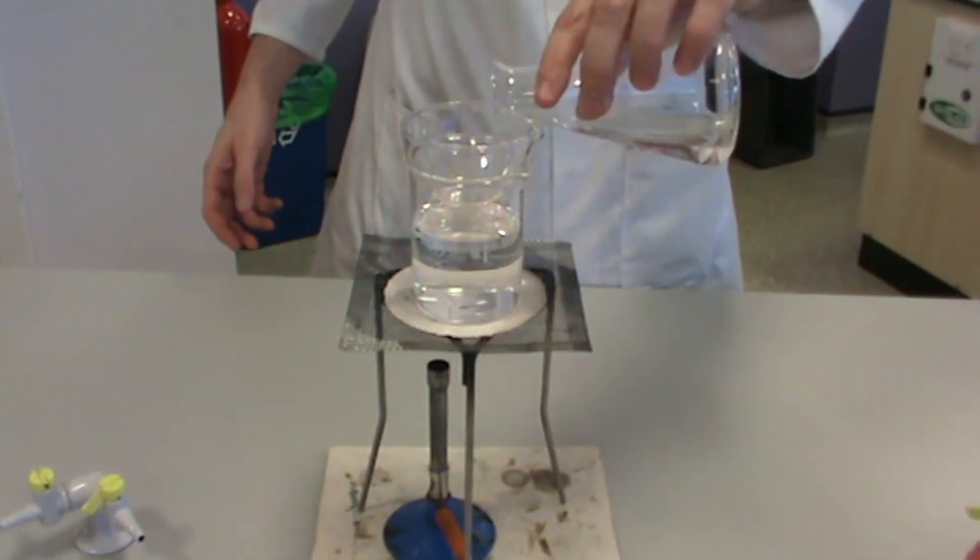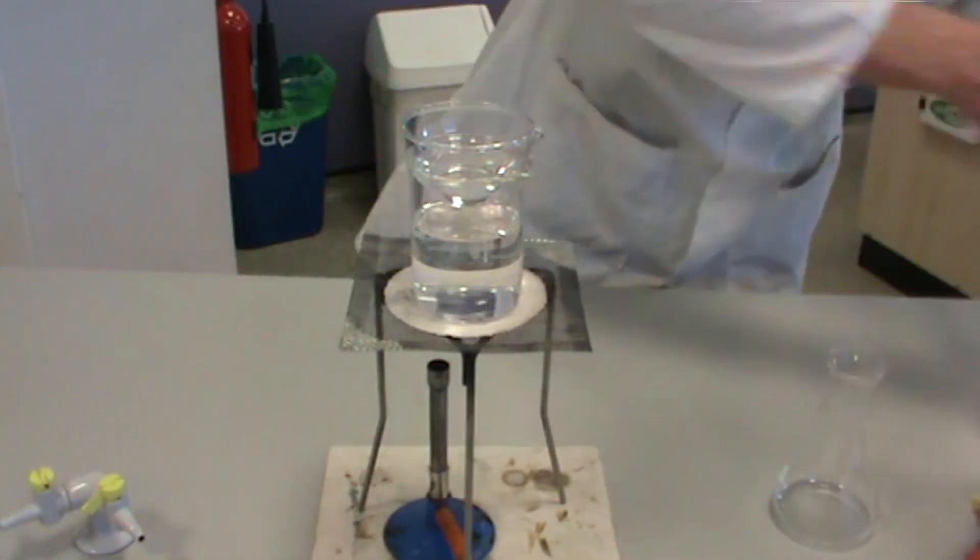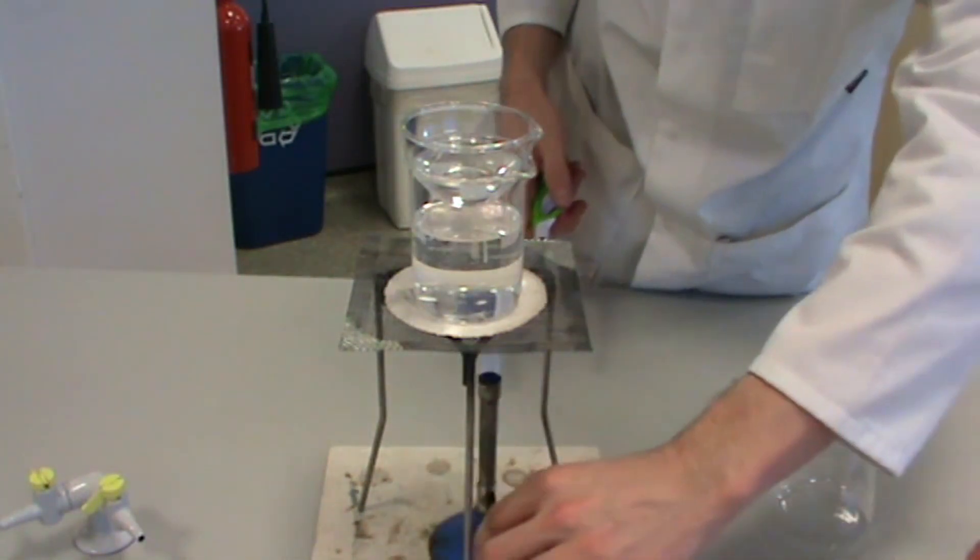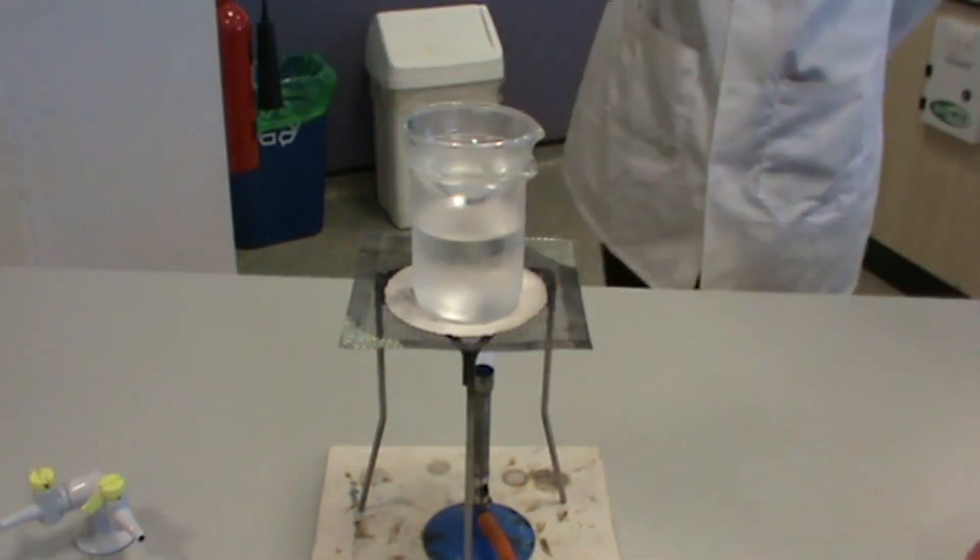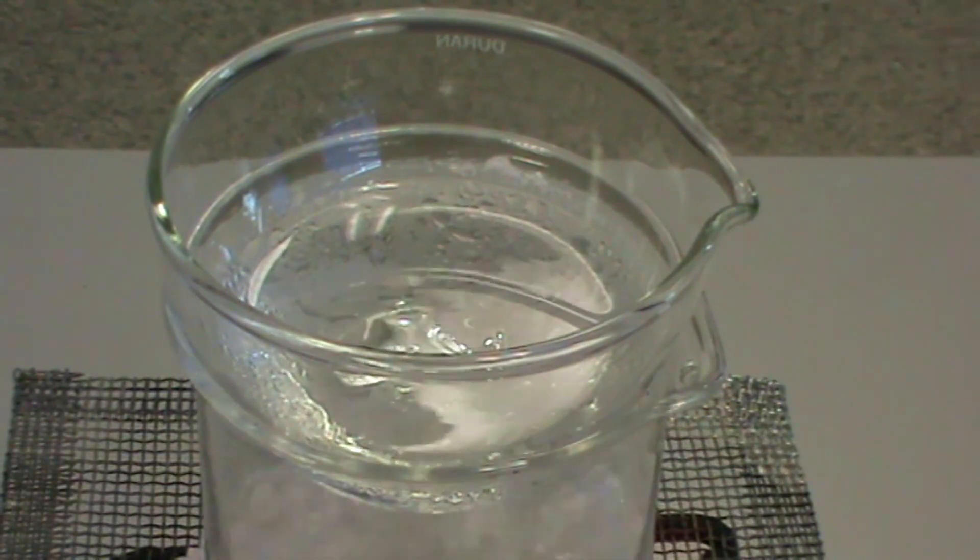Once we have created our sodium chloride solution, we need to obtain the sodium chloride crystals. The apparatus is set up as shown with an evaporating basin placed above a half full beaker of water. The sodium chloride solution is poured from the conical flask into the evaporating basin and then heated using a Bunsen burner on a roaring flame.